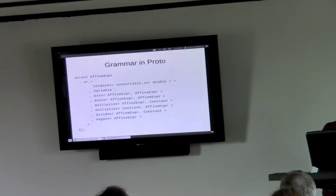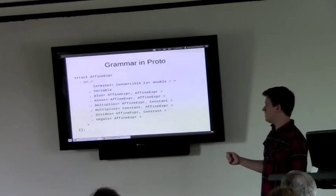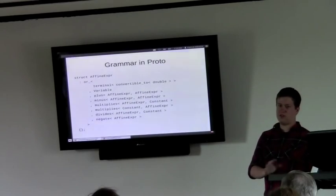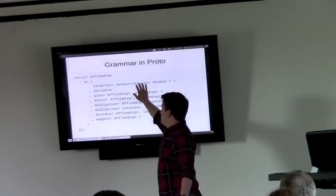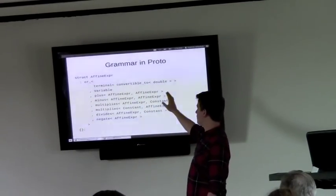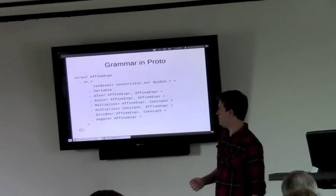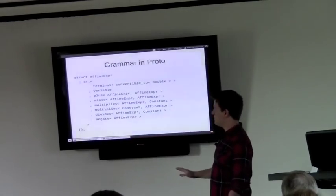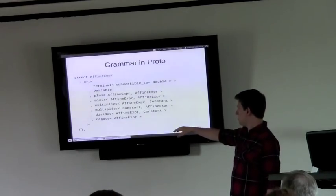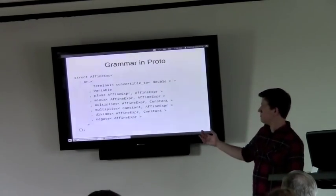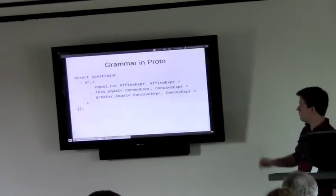Now, in Proto, Proto gives you this facility for defining a grammar, where it actually looks very similar to what was on a couple slides ago. So this is a constant. This is using some Proto machinery to match anything that converts to double. And then variable, I haven't spelled out here, but it's another terminal type that I've defined. And then you can add, subtract, multiply by constants. That's exactly what we saw in the grammar already. And then constraints, you can define.